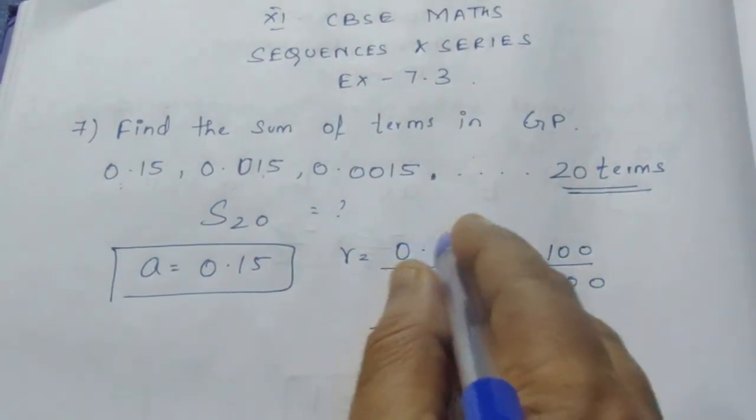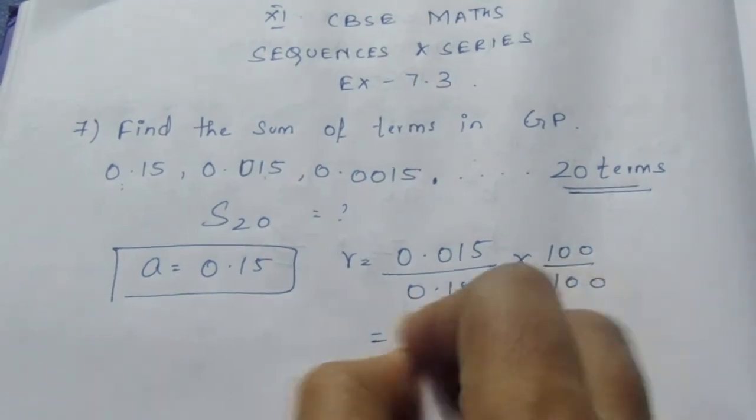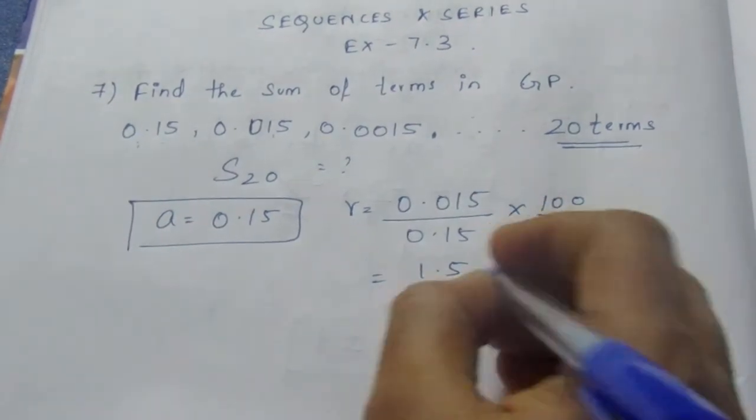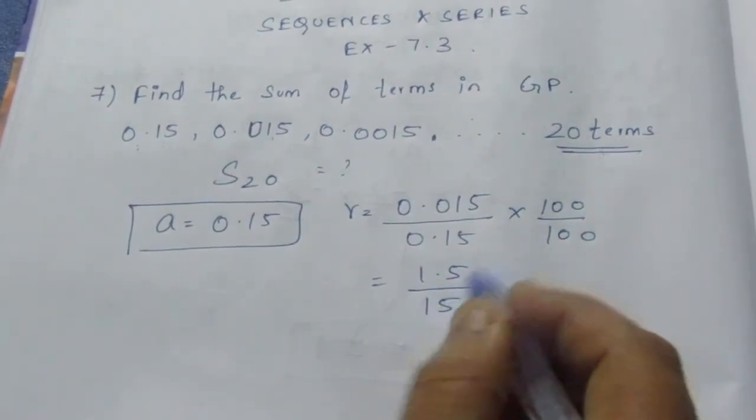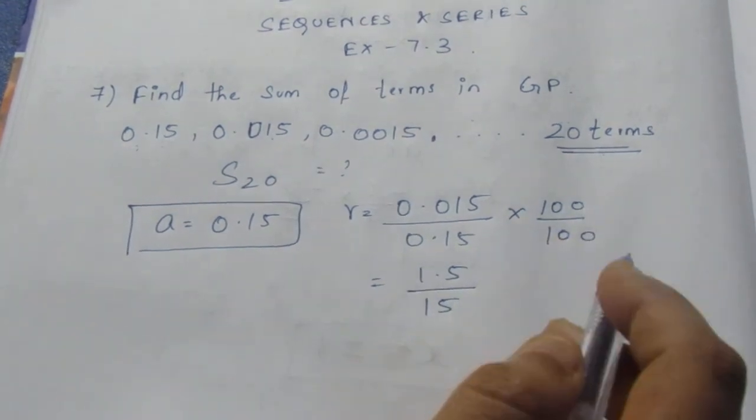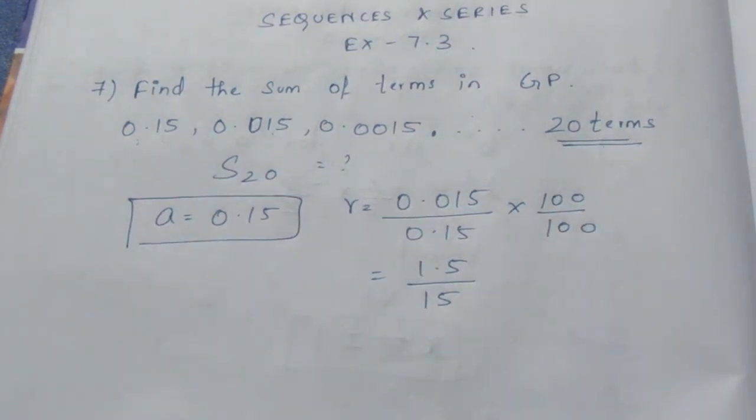Here it becomes 1.5 by 15. Now if you don't know how to cancel with the decimal point, multiply by 1000. So that is easy for you to cancel it.